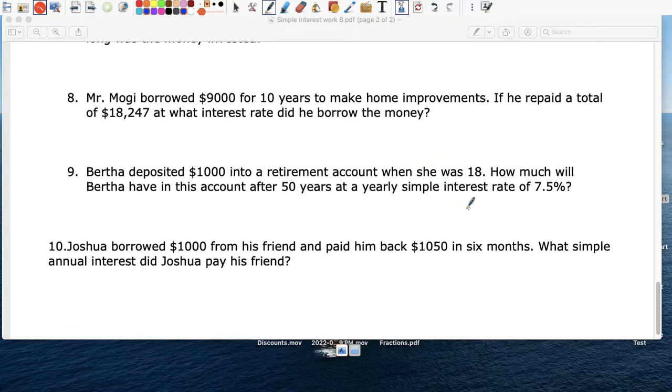So Bertha deposited $1,000 in her account when she was 18. How much money will she have 50 years later at a simple rate of 7.5%? So $1,000, the interest rate is 0.075, and the time is 50 years. So let's see how much money she'll have. $1,000 times 0.075 times 50, $3,750.